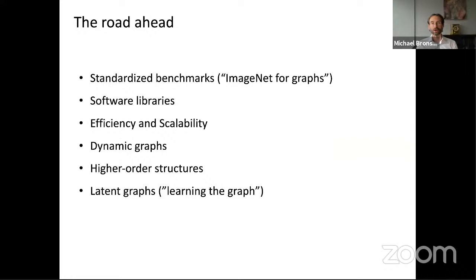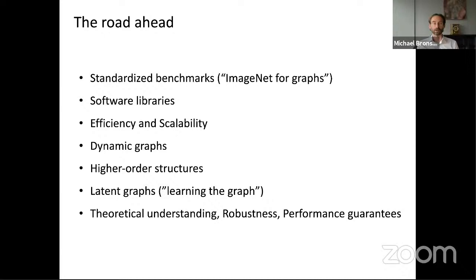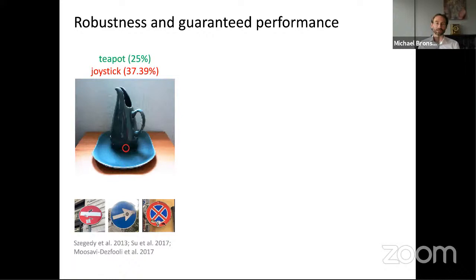Another important point is that so far we assume the graph is given. In many situations we still want to use graphs to model the structure of data, but this graph is not given — it's what we call a latent graph. Here we want to learn both the graph and the filters. Another important aspect is theory: we can try to gain theoretical understanding of how powerful graph neural networks are, what functions they can represent, and topics like adversarial robustness. It appears you can attack graph neural networks, but you can also provide guarantees about their performance in the presence of adversarial perturbations. Just as you can take an image and touch one pixel to fool a CNN, similar attacks exist on graphs.